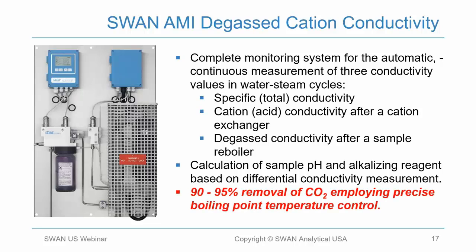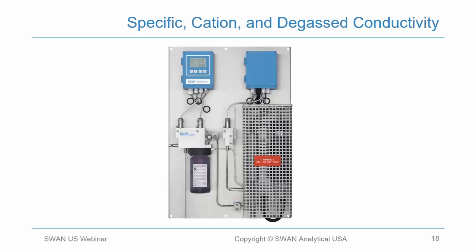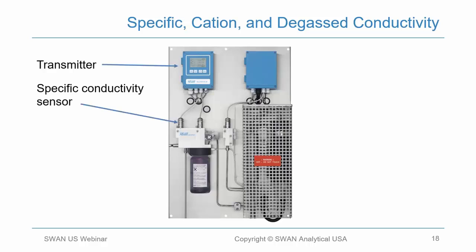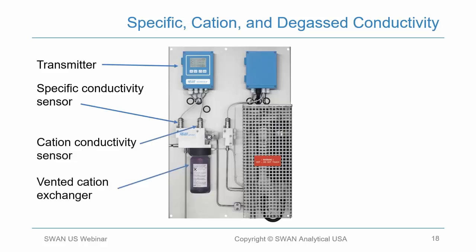The system is designed to remove 90 to 95 percent of the CO2, compared to the 28 to 58 percent seen in the 2004 evaluation by Dr. Drew. The reason it can achieve 90 to 95 percent removal is by employing precise boiling point temperature control. The system includes the transmitter and specific conductivity cell — when the sample enters, the first measurement performed is specific conductivity. The sample then flows through the vented cation exchanger and past the cation conductivity sensor.